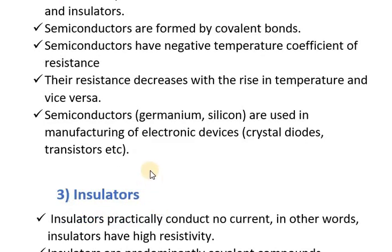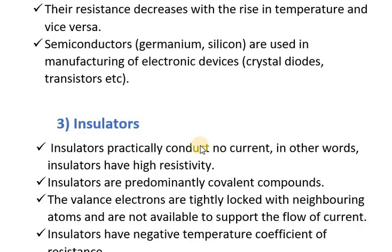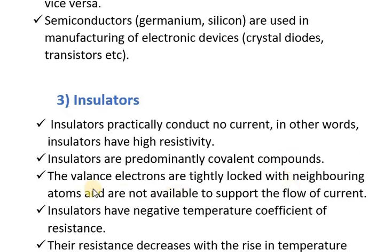There are many basic electronics that use semiconductors, mostly silicon. Next, the third type is insulators. Insulators practically conduct no current; in other words, insulators have high resistivity. Insulators have high resistance — more than both conductors and semiconductors — and also have high resistivity. Insulators are predominantly covalent compounds.